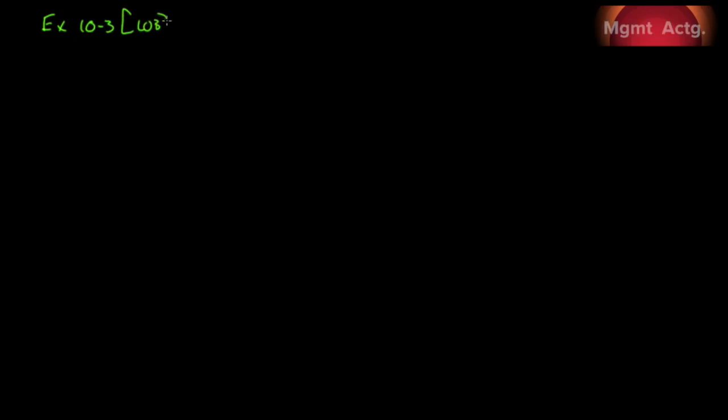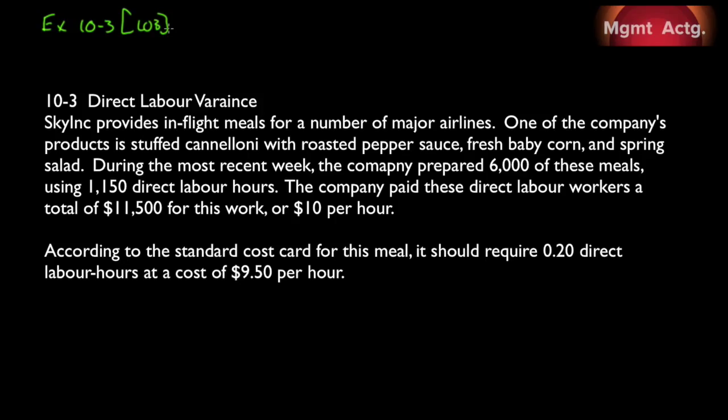Exercise 10.3, learning objective number 3 — direct labor variances. Sky Inc provides in-flight meals for a number of major airlines. One of the company's products is stuffed cannelloni with roasted pepper sauce, fresh baby corn, and spring salad. They make it sound nice, but if you've ever been on an airline and had this type of food, it is not nice at all.